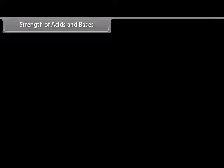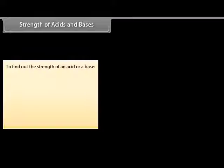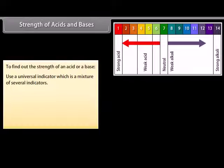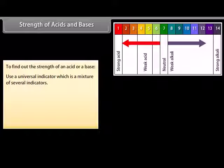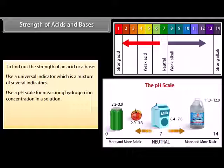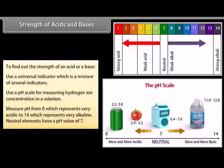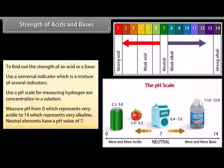To find the amounts of ions present in a solution or to find out how strong an acid or base is, you need to use a universal indicator. The universal indicator is a mixture of several indicators and shows different colors at different concentrations of hydrogen ions. A pH scale measures hydrogen ion concentration in a solution, ranging from 0, which represents very acidic, to 14, which represents very alkaline. Neutral elements have a pH value of 7.